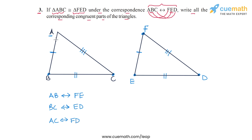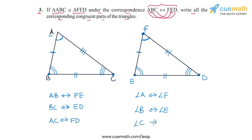Now let's come to the angles. Angle A corresponds to angle F in the second triangle. Angle B corresponds to angle E. And finally, angle C in the first triangle corresponds to angle D in the second triangle. These are the correspondence relationships between the sides and the angles. With this we have completed question number 3.